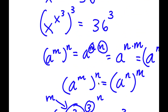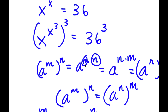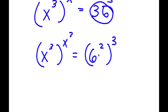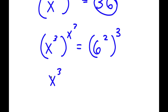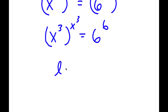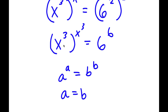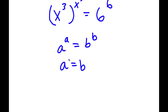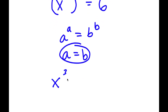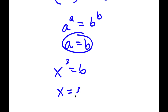Remember, if I have a to the power of m to the power of n, this equals a to the power of m times n. So 6 squared to the power of 3 equals 6 to the power of 2 times 3, which is 6 to the power of 6. Now if I have something in the form a to the power of a equals b to the power of b, this means a equals b. Here a is x to the power of 3 and b is 6, so x to the power of 3 equals 6, meaning x equals the cube root of 6.